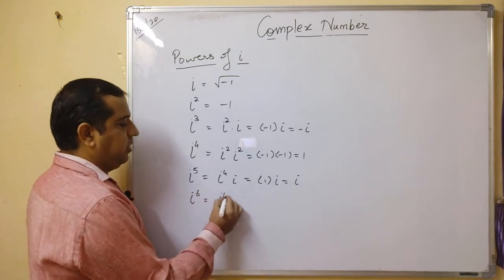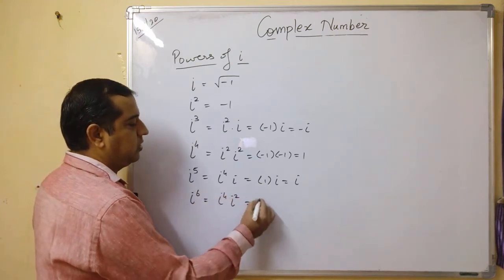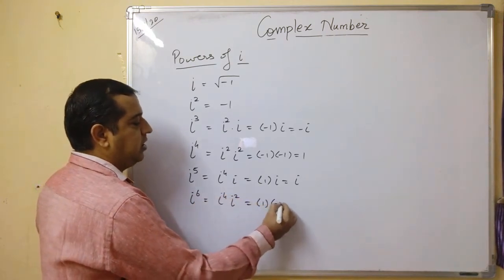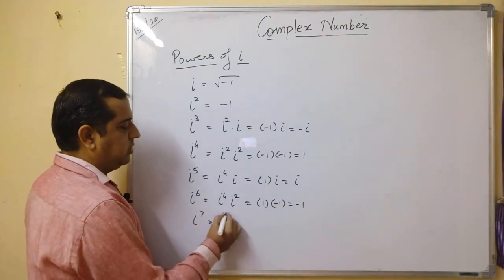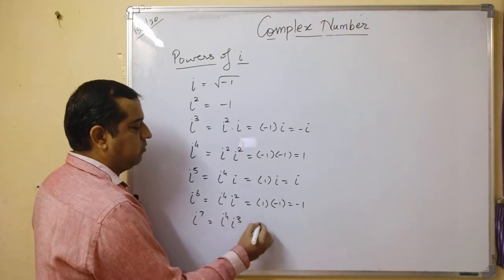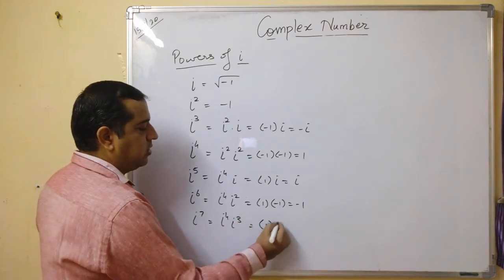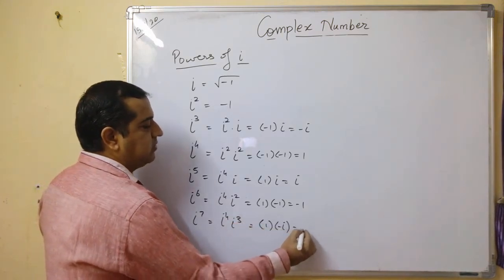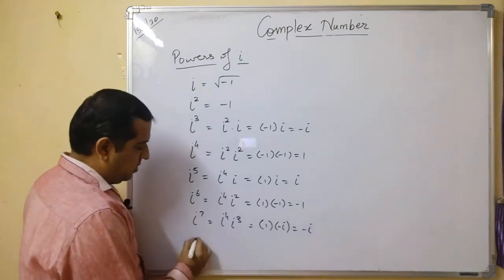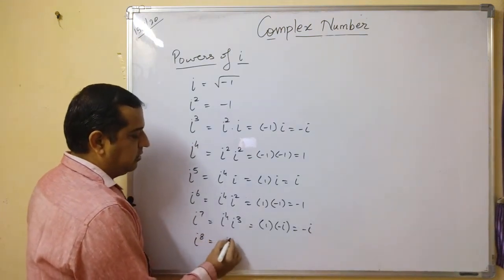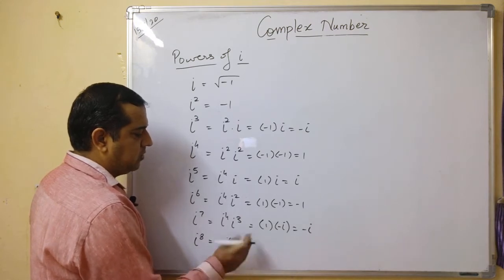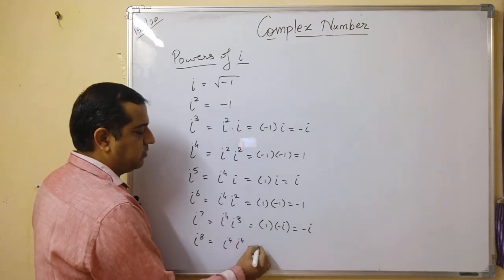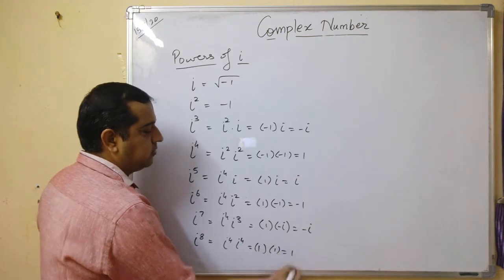i⁶ is i⁴ times i². i⁴ is 1, i² is -1, which gives -1. i⁷ is i⁴ times i³. i⁴ is 1, i³ is -i, which gives -i. And i⁸ is i⁴ times i⁴, which is 1 times 1, which is 1.